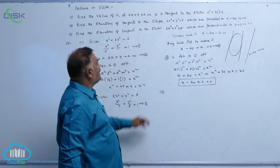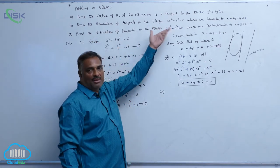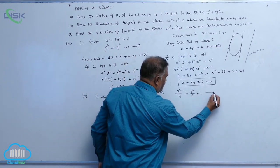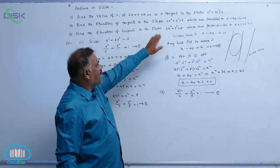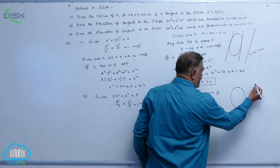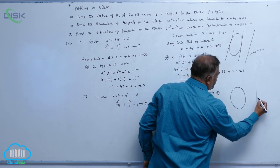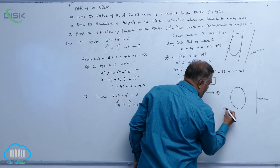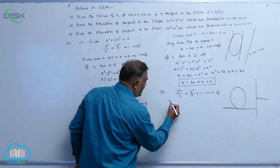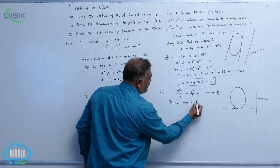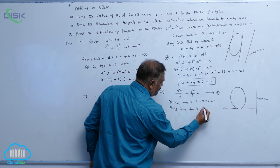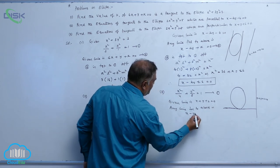Now let us come to the third problem: find the equation of tangent to the same ellipse, x squared by 4 plus y squared by 8 equal to 1 — call it equation 1 — which are perpendicular to the line x plus y plus 2 equal to 0. Any line perpendicular to the above is given by x minus y plus k equal to 0.